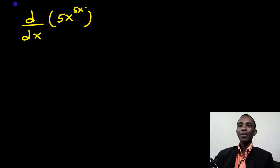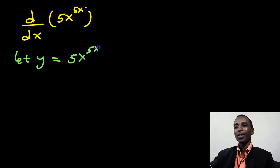So let's get started with this one. Now the first thing I'm going to do is to just let y be equal to this function here. That makes it a little bit easier. So we have 5x to the power of 5x. Now notice in this problem, I don't have brackets, maybe something like this.